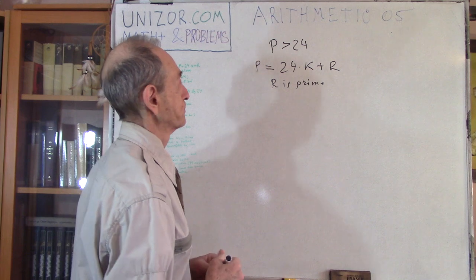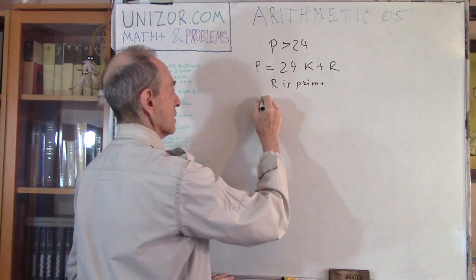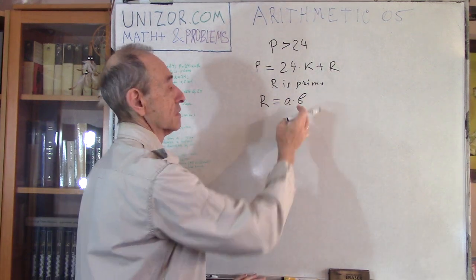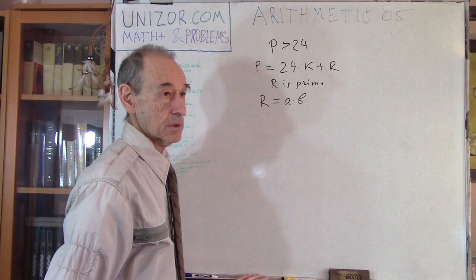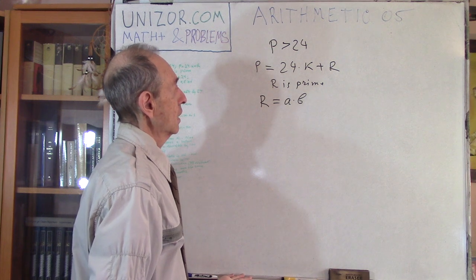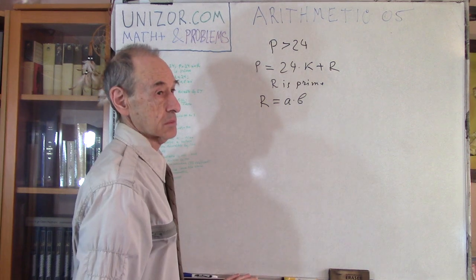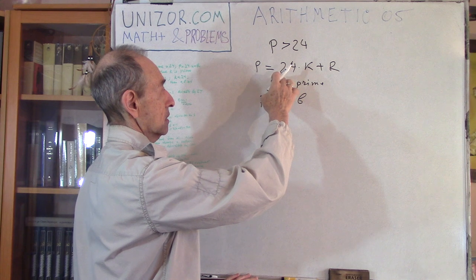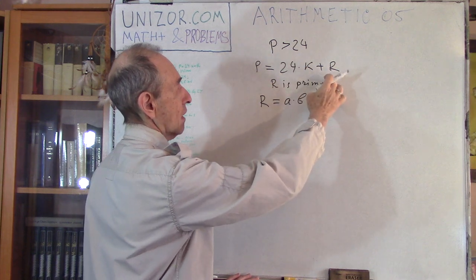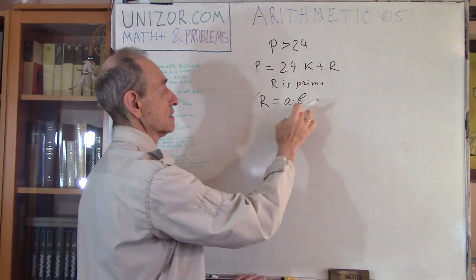Here is what I suggest as a solution. Let's assume R is not prime, which means it's supposed to be represented as two different numbers, both of them greater than one. Now, don't forget that P is supposed to be greater than 24, and R is supposed to be less than 24. So R is a number less than 24, represented as a product of something.